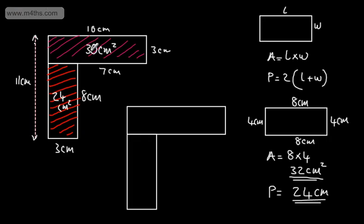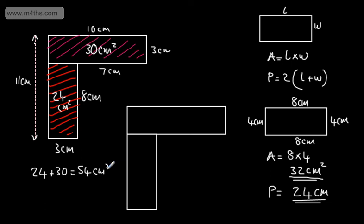To find the total area of the composite shape, we add the two areas together: 24 plus 30 equals 54 centimetres squared. So the area is 54 centimetres squared.